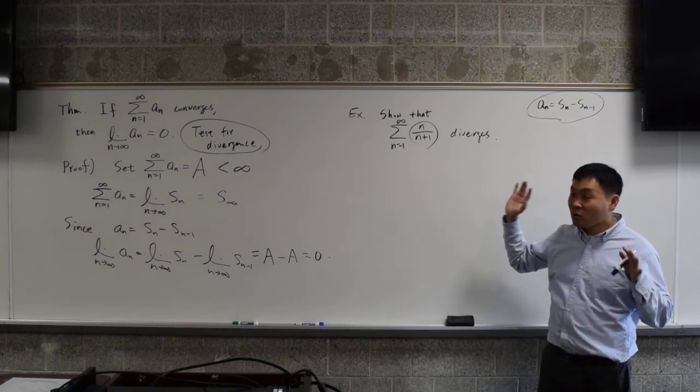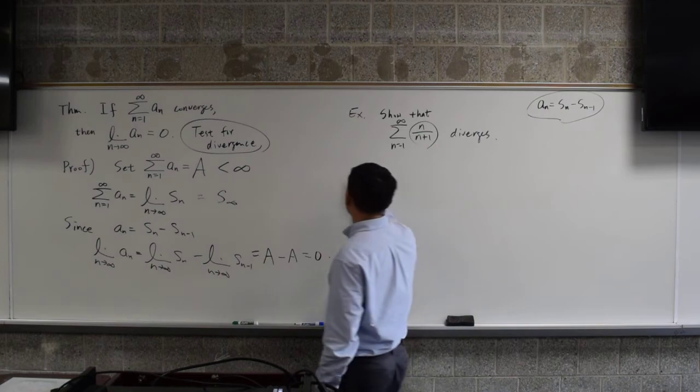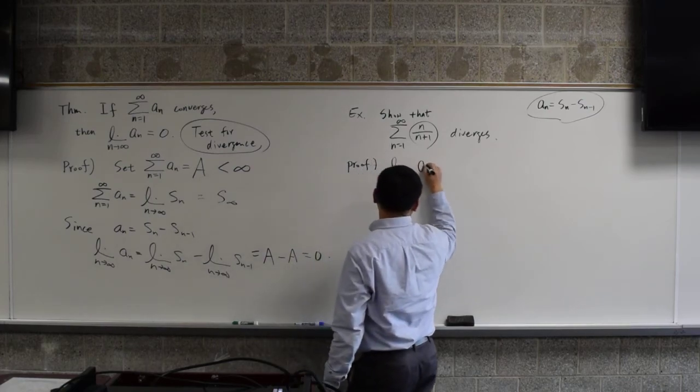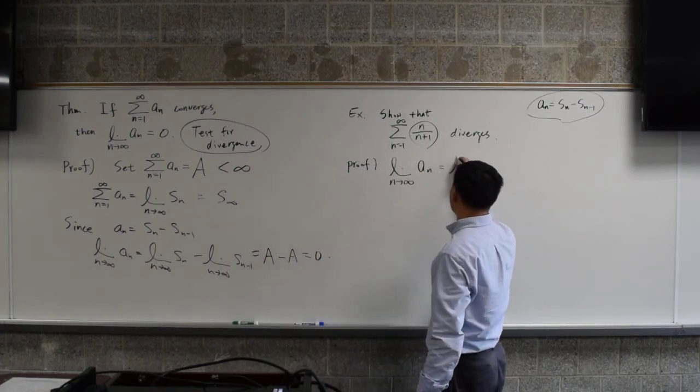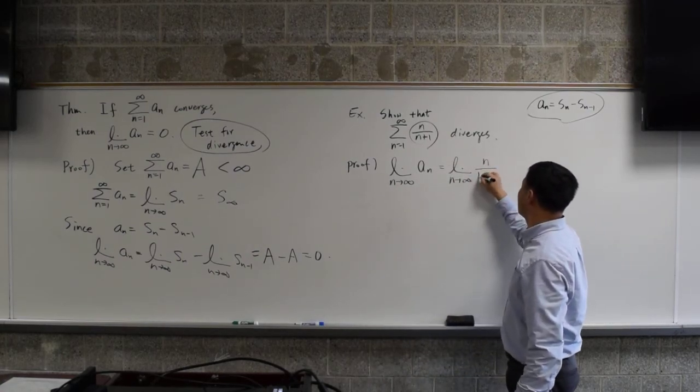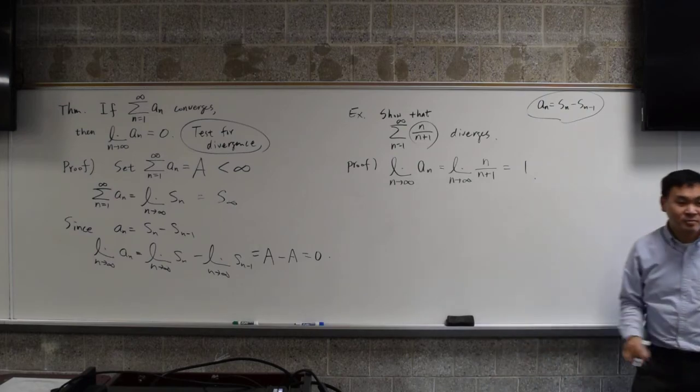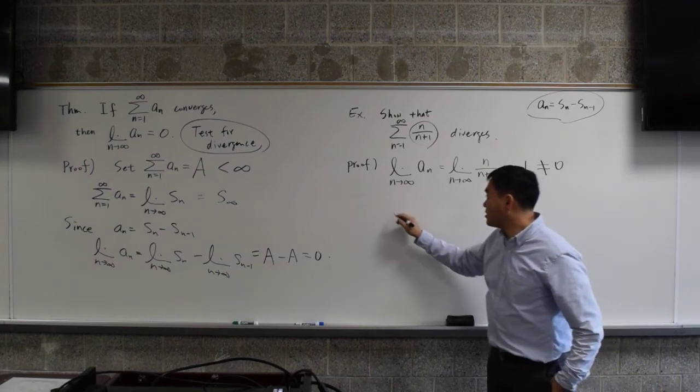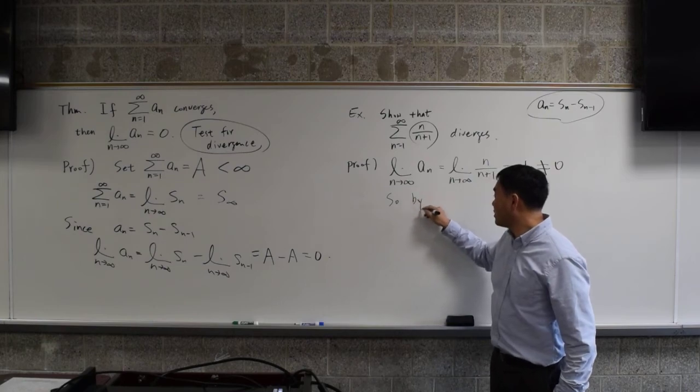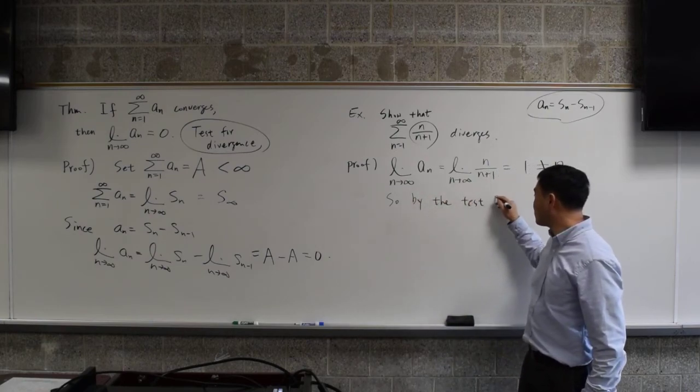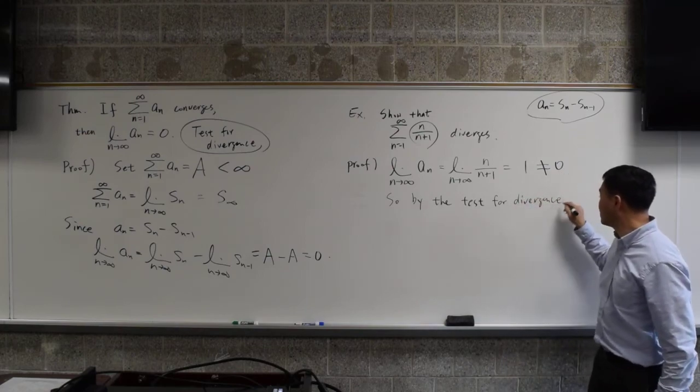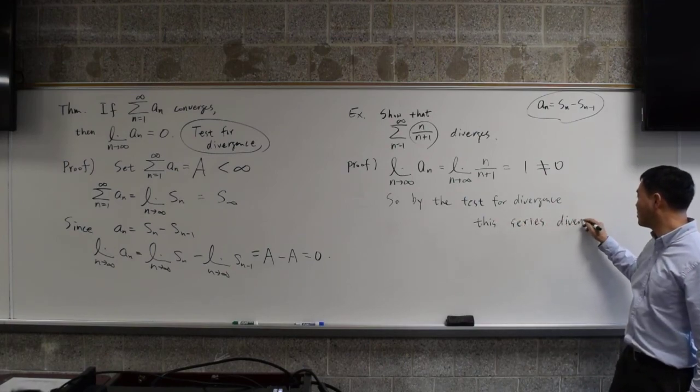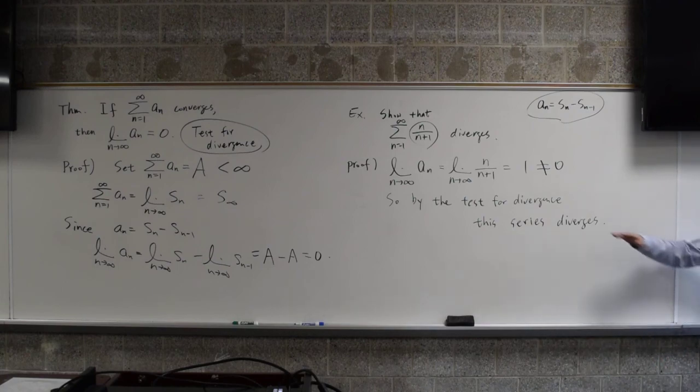Now the correct way to show that it diverges is to just say that the sequence goes to something that's not 0, because that's what it says. Prove limit a_n of n going to infinity. This is 1, which is not equal to 0. You have to say it's not equal to 0. So by the test for divergence, this series diverges. That's how you say it. You should always say test for divergence.